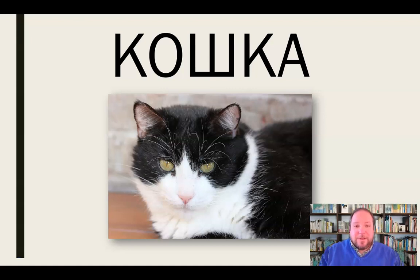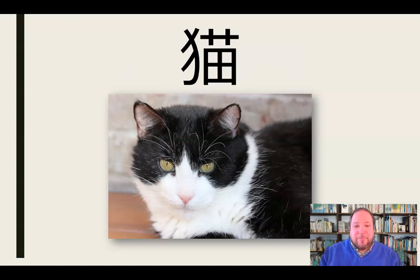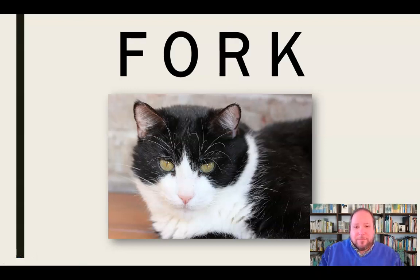If we went slightly south of Russia to China, we would see that this is the symbol for this animal. I'm not even going to attempt to pronounce how they would pronounce it, but that's the symbol. This video is in English — we're probably all going to speak English. But I've decided I don't want to call it a cat anymore. Let's call it a fork. From now on, this animal shall be henceforth known as a fork — not to be confused with the fork you use to eat.